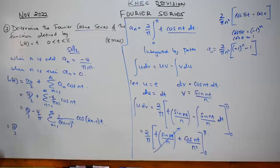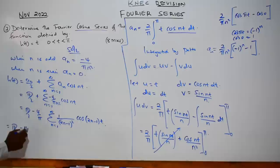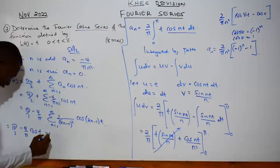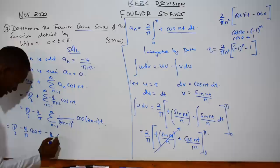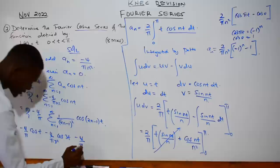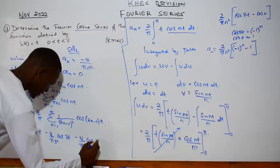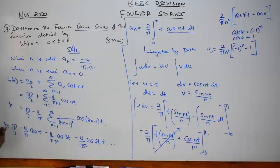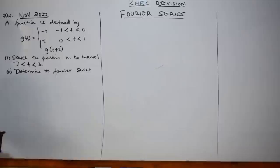Expanding the first few terms: h(t) = π/2 − (4/π)cos(t)/1² − (4/π)cos(3t)/3² − (4/π)cos(5t)/5² − ... Both the compact summation form and the expanded form are correct. This completes part 7a.